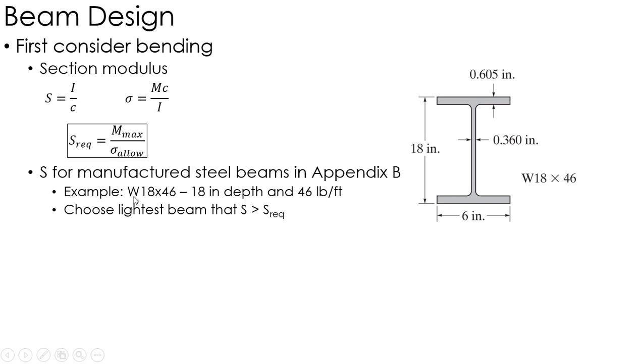And what that means is 18 inches deep, which is 18 inches this way in the cross-section. And the 46 means it's 46 pounds per foot. So what we want to do is we want to choose a beam that meets the required section modulus.